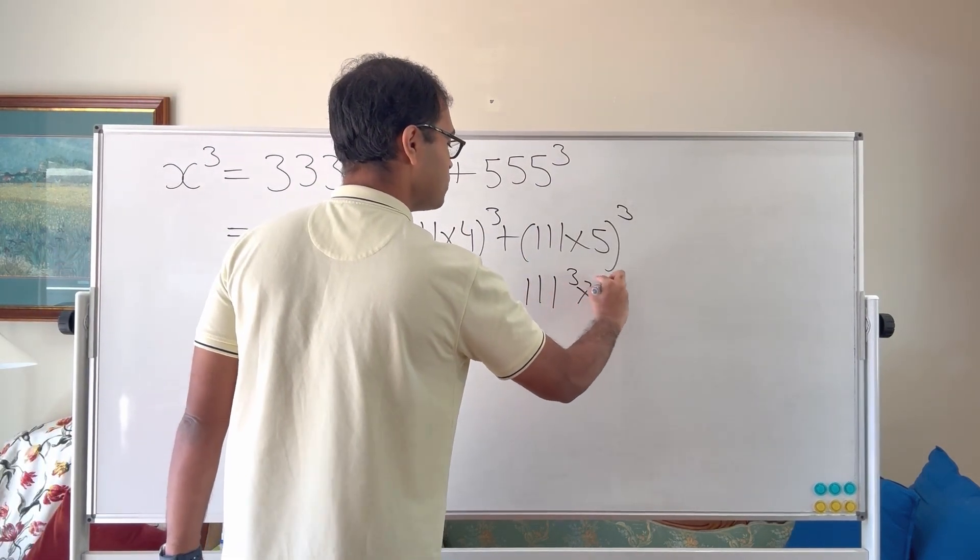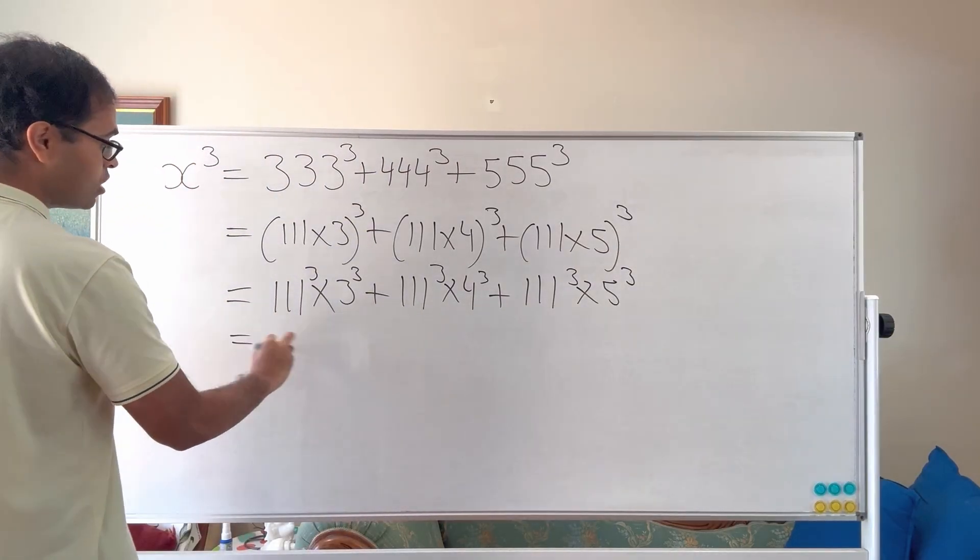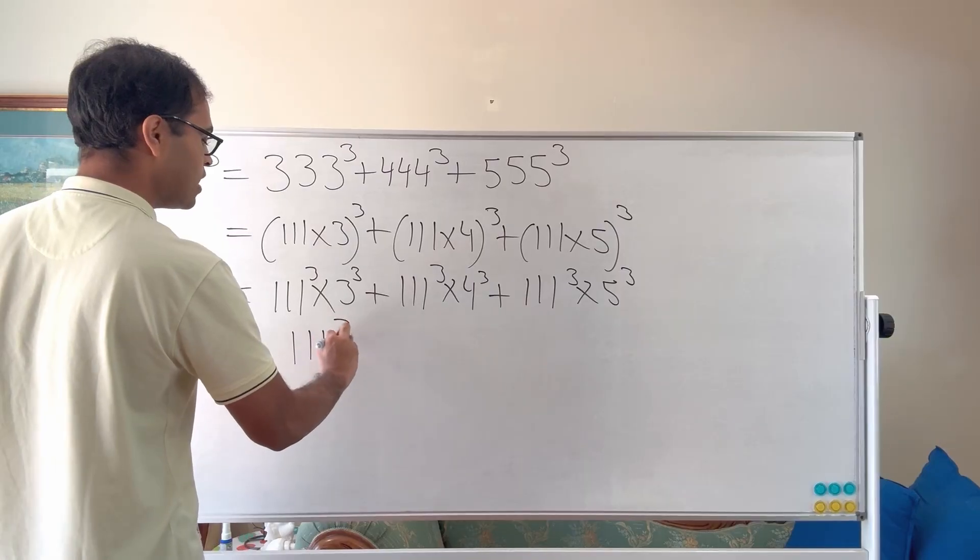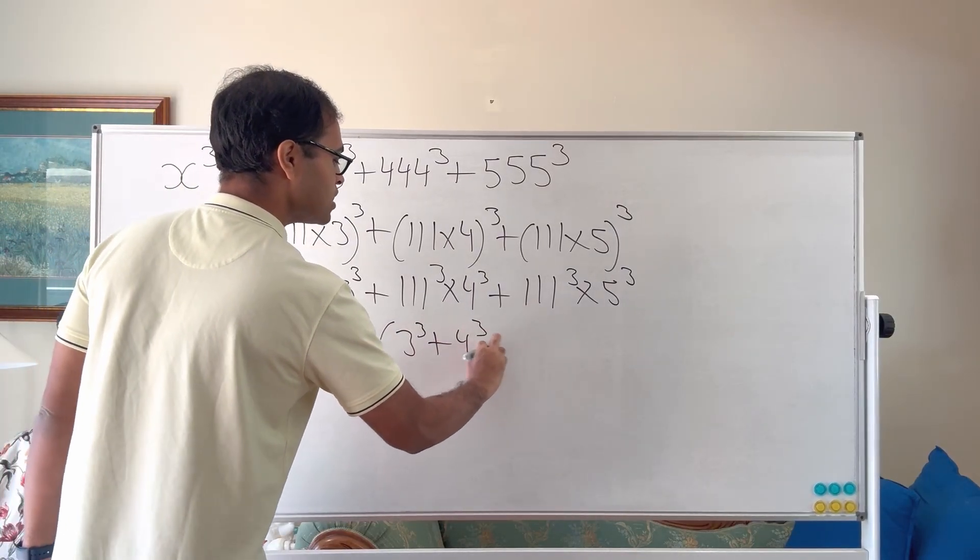Okay, so we've got this expansion now here and we can now factor out something from the right hand side. We can factor it out and say this is 111 cubed times 3 cubed plus 4 cubed plus 5 cubed.